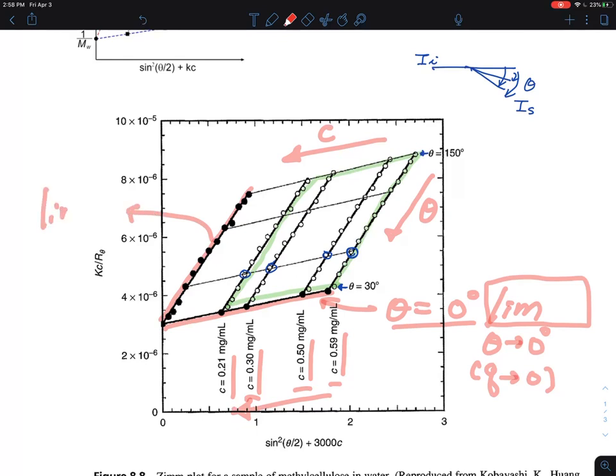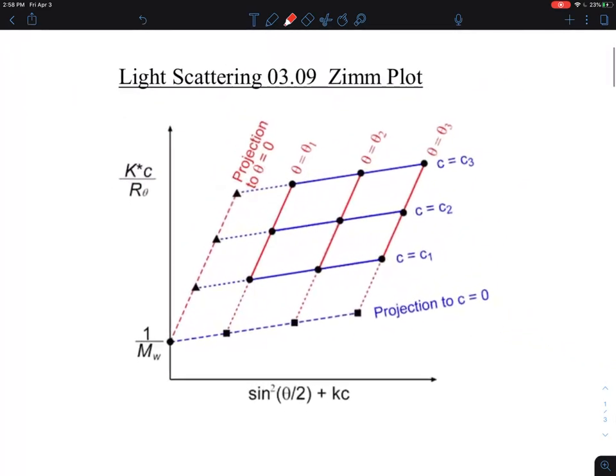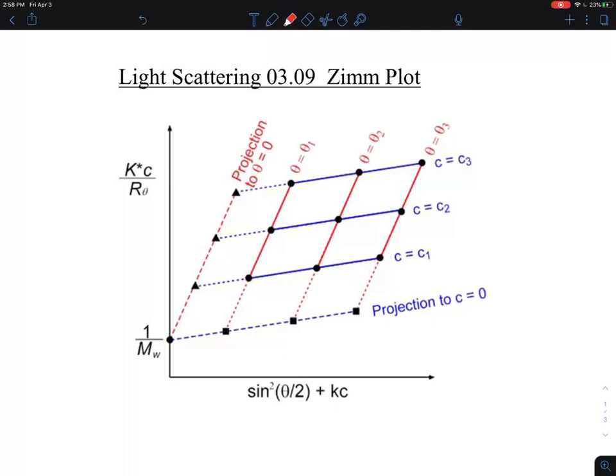In the limit, your concentration goes to zero. And that's the limit. So essentially, your goal is trying to get line number one, line number two from this Zimm plot. It looks like a diamond. When you look at that, it looks like a diamond. And that's a good thing for you guys to know.